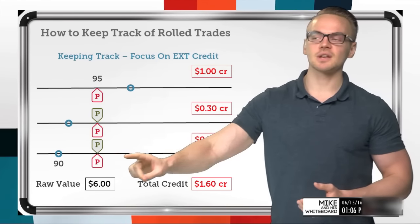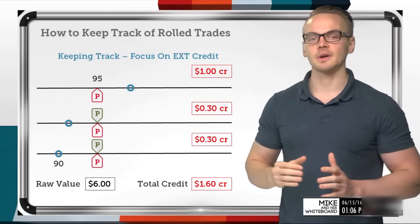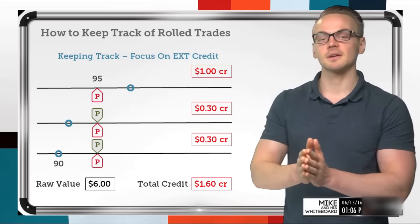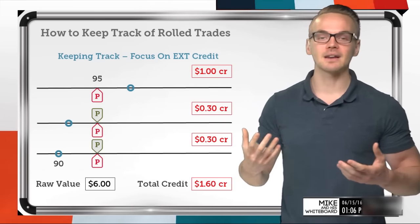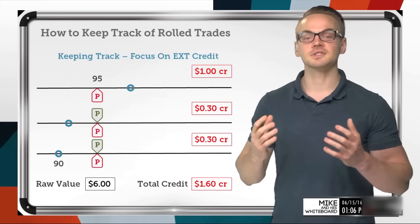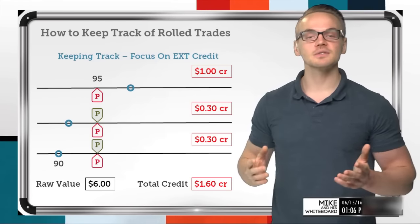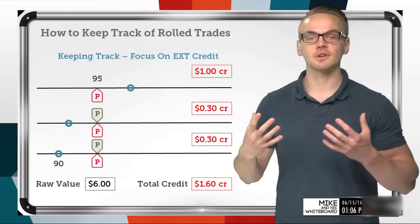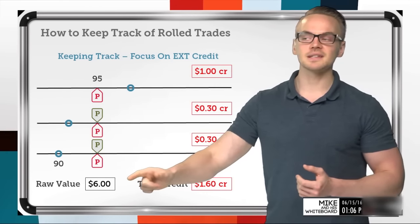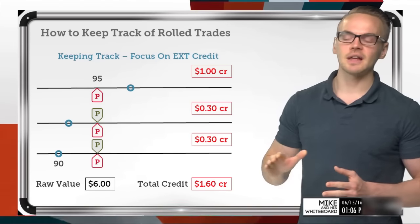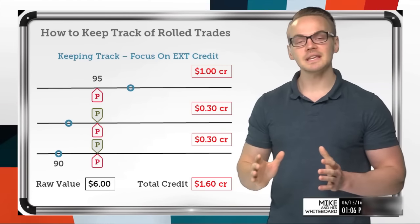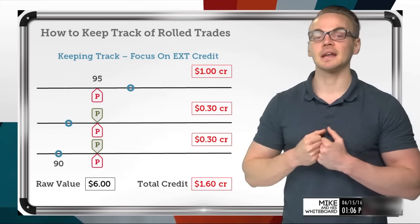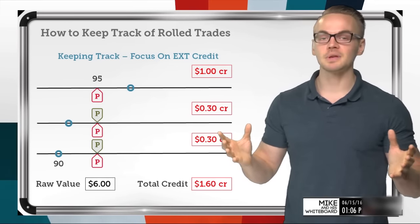Here's where it gets tricky from the portfolio page standpoint: the portfolio page on any platform doesn't keep track of rolling — it only shows you the open position. Right when I roll this position, even though I know I'm at a loss, it's going to show a P&L of zero. So if the raw value of this new option is six dollars, what I need to realize is that I've collected a total of a dollar sixty, and to break even on this trade I need to buy back this option for a dollar sixty.